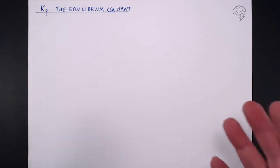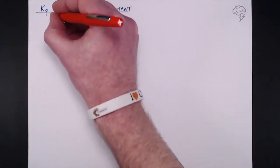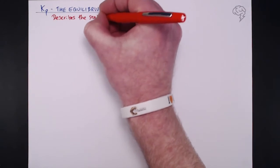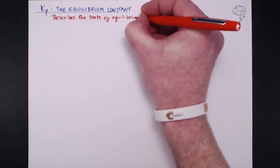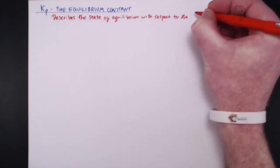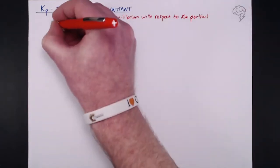So what's our cast iron definition of Kp? Well Kp describes the state of equilibrium with respect to the partial pressures exerted by the reactants and products. And that's denoted by a small p.